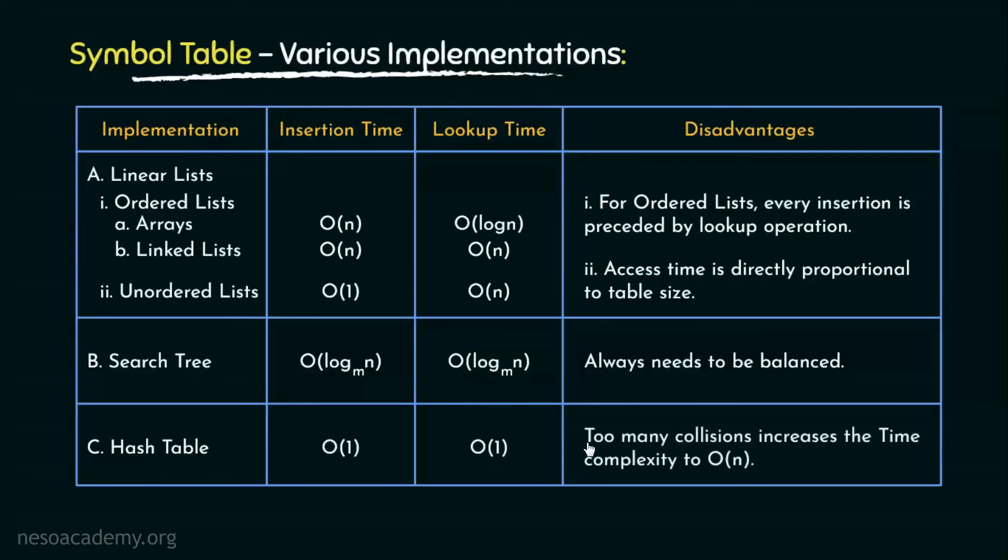Now in case of too many collisions, the time complexity increases to order of n. Now collisions happen when more than one data items are assigned to the same index. In that situation, the hash table resolves it using a linked list. The head pointer of that list is kept in that index and the successive nodes include the data items which were assigned to that particular index. Therefore, in order to traverse the linked list, in worst case, the time taken would be order of n.